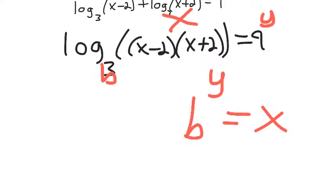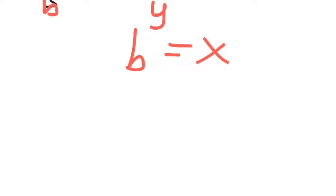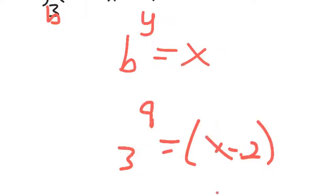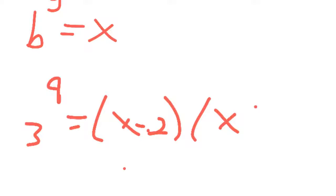So that (x minus 2)(x plus 2) is my x in this case. So I plug in those numbers where they're supposed to go. So I've got 3 to the 9 equals (x minus 2) times (x plus 2).